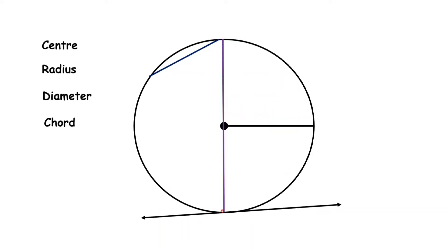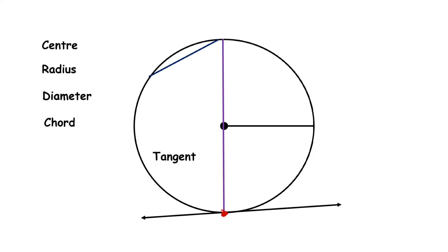Now you can see here we have a line which is touching the circle at one and only one point. If any line touches the circle at one and only one point, then that line is called a tangent of the circle.